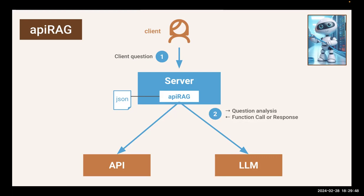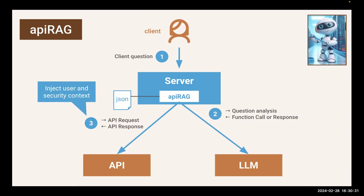LLMs are very creative and probabilistic models — for software engineering that's not so great. If you get a different response every time, there's a high likelihood you don't get good data. When making an API call, you want validated data that matches the API signature. You don't want a creative API call, because the API is stringent about data types. API RAG enforces a schema against the LLM's response so we can guarantee it's a valid API call before executing it. API RAG also injects the user and security context into the function call — we never expose the security context to the LLM, ensuring the security context is hard-coded outside the LLM's context.